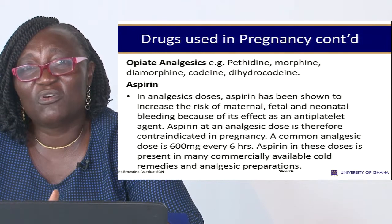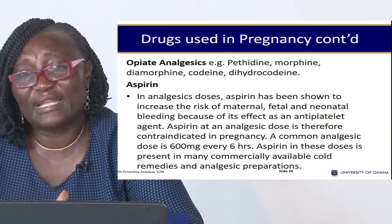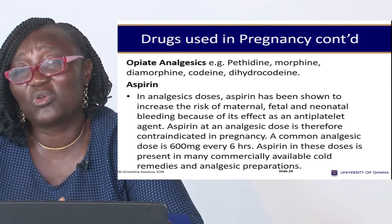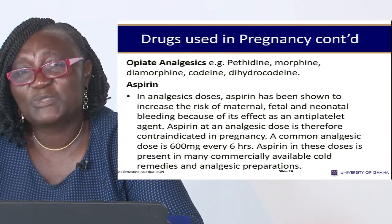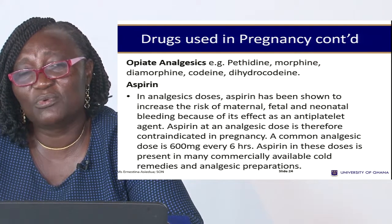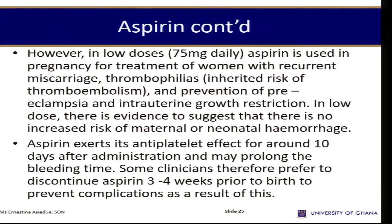Aspirin in analgesic doses is therefore contraindicated in pregnancy. The common analgesic dose is 600 milligrams every six hours, and aspirin in these doses is present in many commercially available cold remedies and analgesic preparations. However, low doses of aspirin — 75 milligrams daily — are tolerable during pregnancy, which tells you that a very small fraction of the normal dose is acceptable.